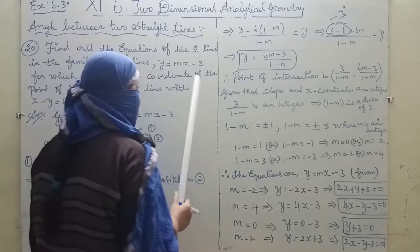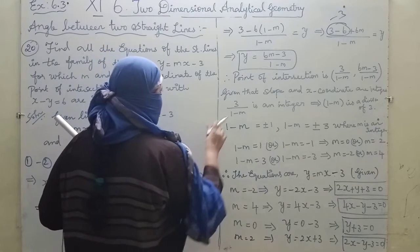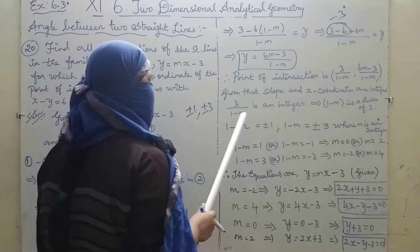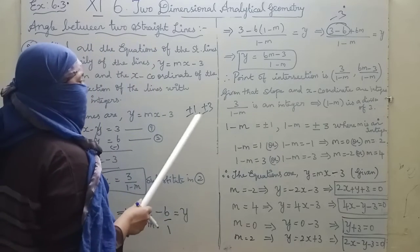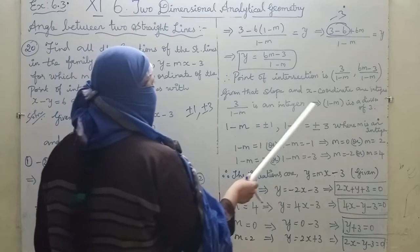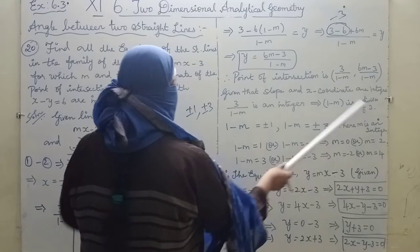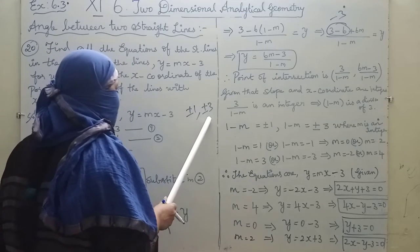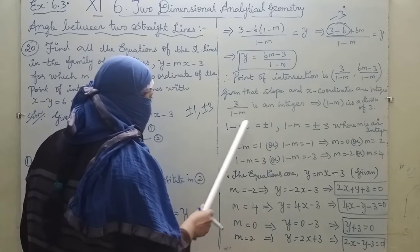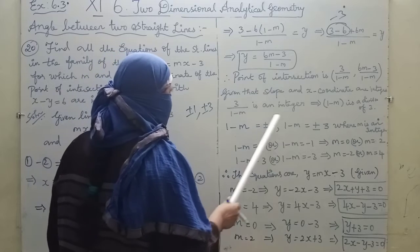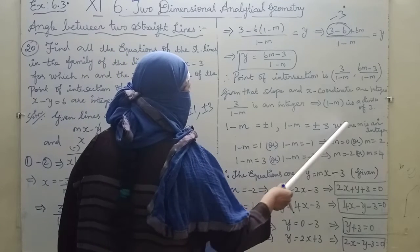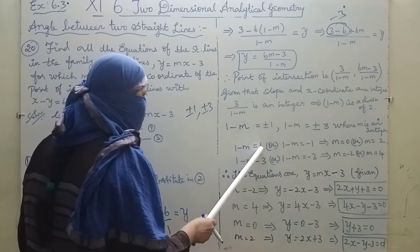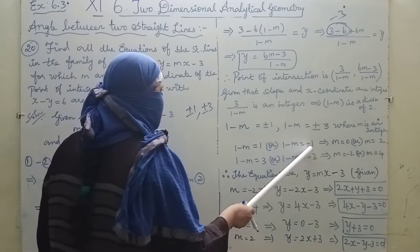For x = 3/(1 - m) to be an integer, (1 - m) must be a divisor of 3. So (1 - m) can be plus or minus 1 or plus or minus 3. Setting 1 - m = 1 or 1 - m = -1.